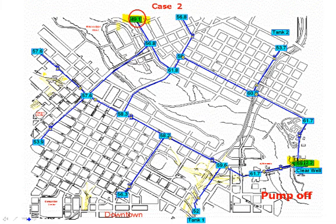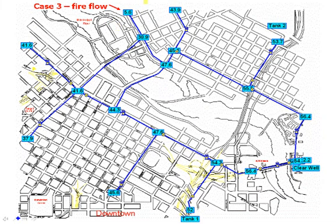Finally, we add a fire demand of around 700 gallons per minute up here, and we see the pressure is down below 20 PSI — too low. This indicates the distribution system can't provide that much fire flow at that point. The real point here is that we can quickly make these evaluations in just a matter of seconds.